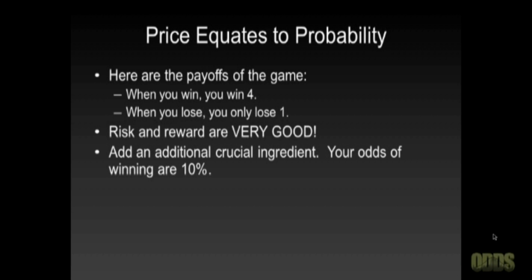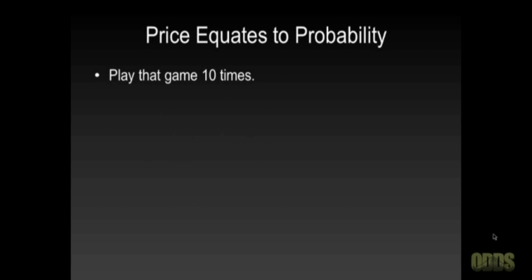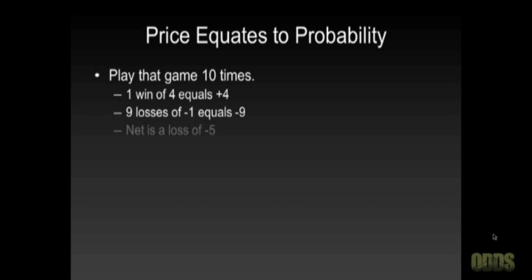Your odds of winning are 10%. So one time in 10 you win 4, and nine times in 10 you lose 1. Well, if we play that game 10 times, we have the following result: one win of 4 equals plus 4, and nine losses of 1 equals minus 9, for a net loss of 5.